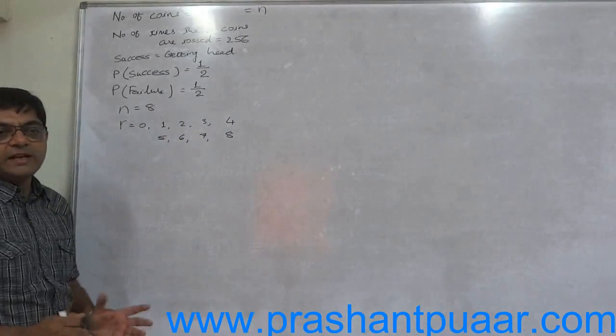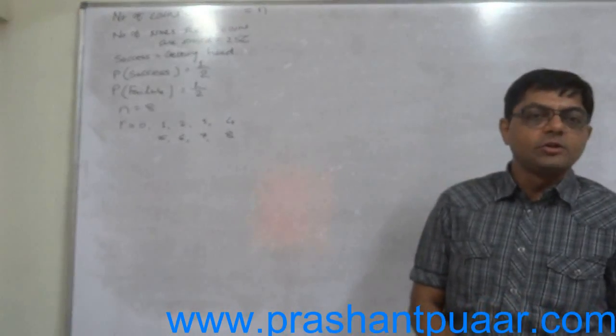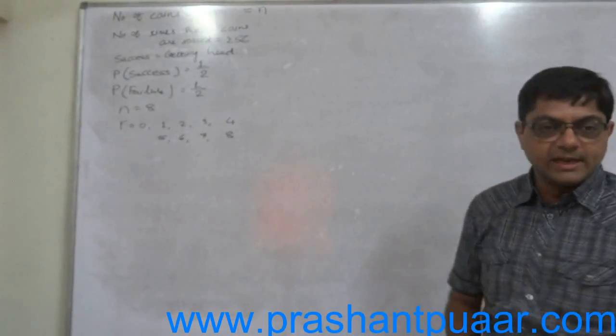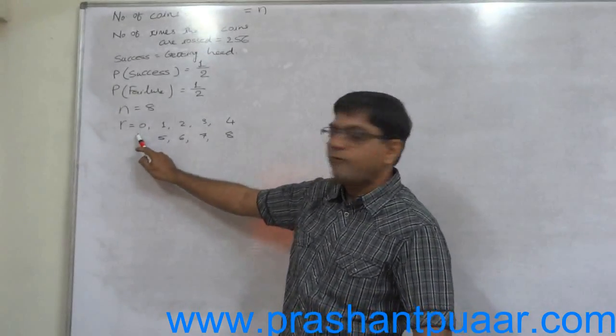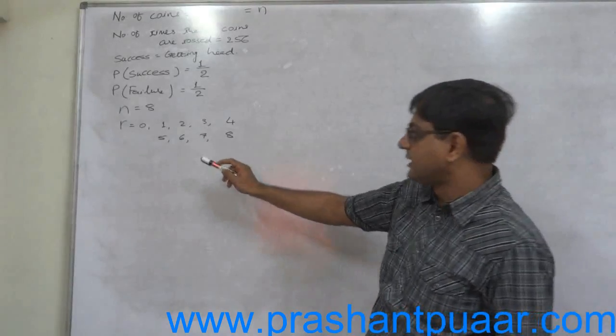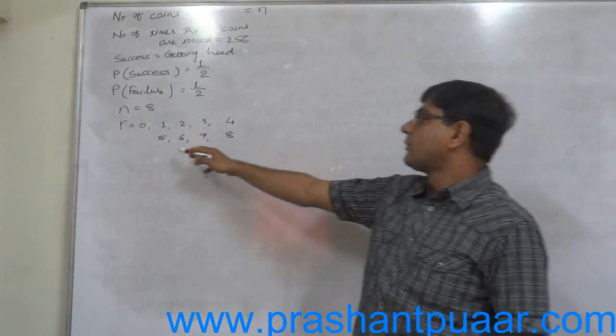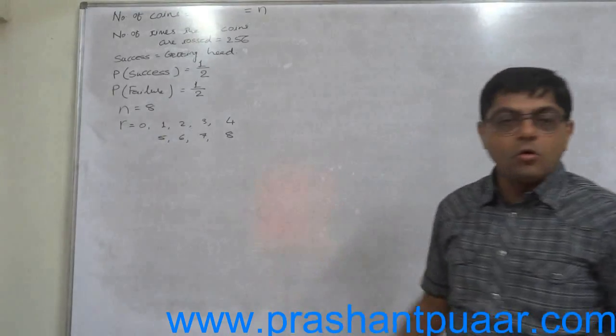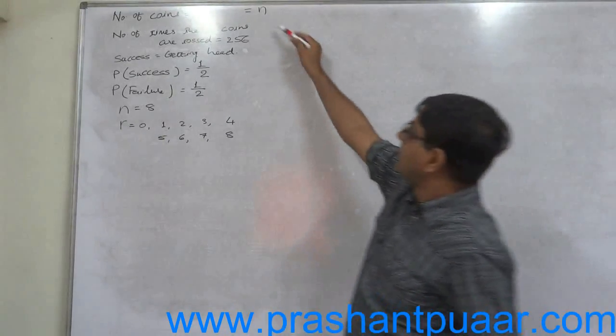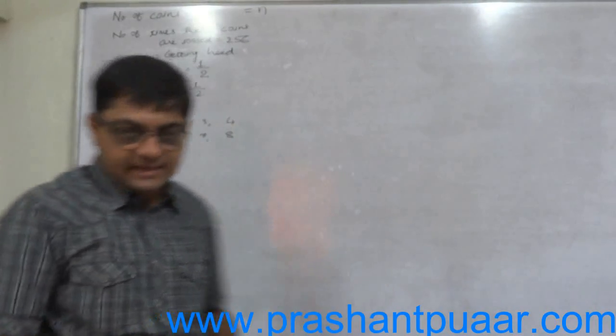If we want to fit a distribution, that means this is the case of fitting a binomial distribution for this particular case. The random variable is made up of all possible mutually exclusive and exhaustive outcomes of the experiment. That means 0 or 1 or 2 or 3 or 4 or 5 or 6 or 7 or 8 heads out of 8 coins. This experiment will be repeated 256 times.